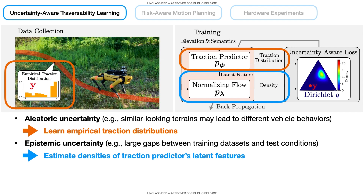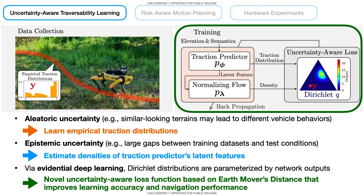In addition, we capture epistemic uncertainty due to large gaps between training datasets and various test conditions by estimating the densities of the traction predictor's latent features. Via evidential deep learning techniques, Dirichlet distributions are parameterized by network outputs. The entire network is trained using the proposed uncertainty-aware loss function based on Earth Mover's Distance.